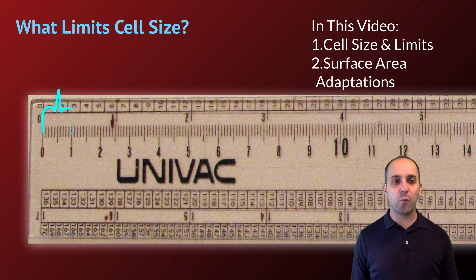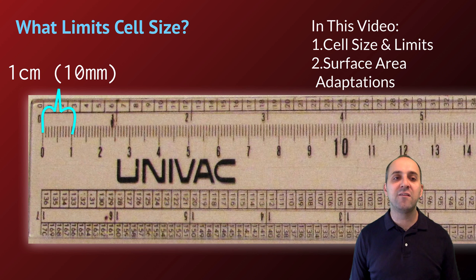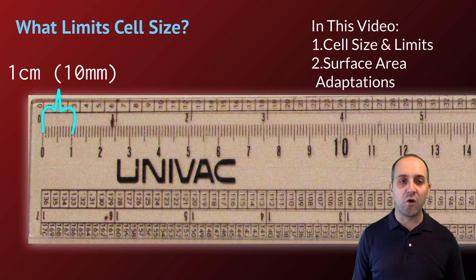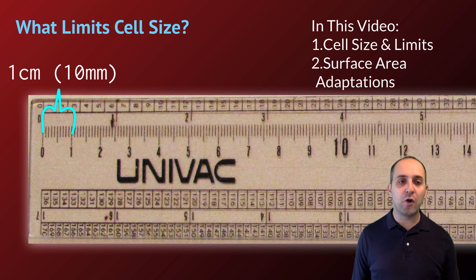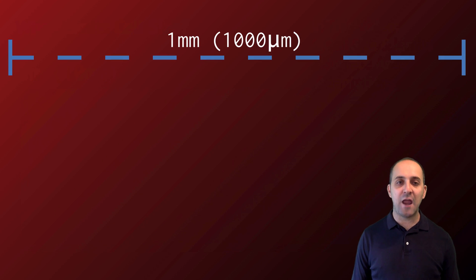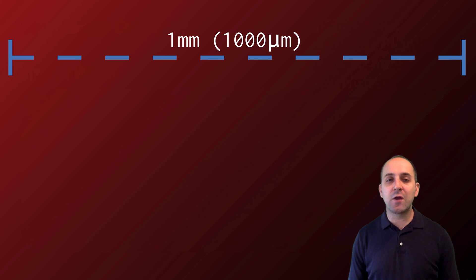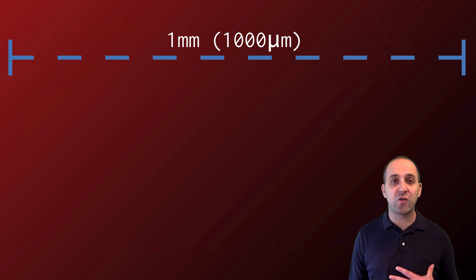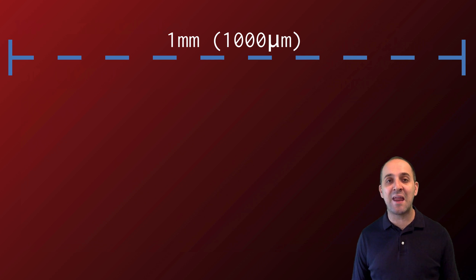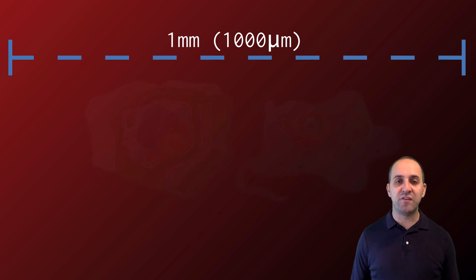We're going to blow up this little region of the ruler. This is one centimeter, which is ten millimeters. Let's go in and look at one millimeter. I'm going to blow up one of those ten millimeters — that's the range you see at the top. One millimeter can be divided up into a thousand micrometers, and micrometers are really the scale we're going to use when talking about how large any particular cells are.